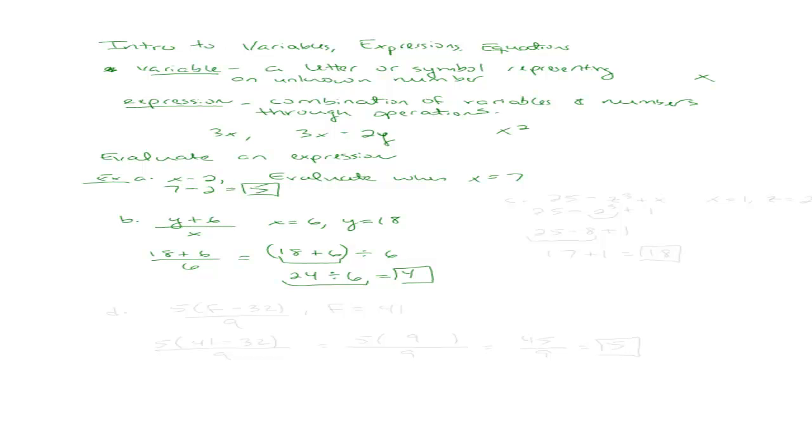Let's try another example. Let's say we have 25 minus z cubed plus x, and I want to evaluate when x equals 1 and z equals 2. Well, it's going to be 25 minus 2 cubed plus 1. The order of operations says I do exponents first, so it's 25 minus 8 plus 1. And then addition and subtraction I do from left to right. So 25 minus 8, that would give me 17 plus 1, and that would give me 18. So that would be my final answer.